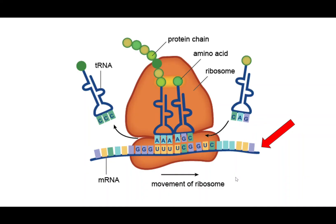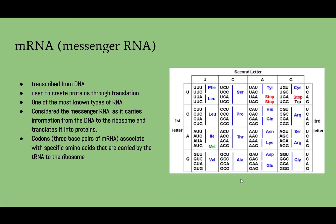This arrow is pointing to the mRNA. mRNA, or messenger RNA, is used to create proteins through translation. Codons, or three base pairs, associate with specific amino acids that are carried by the tRNA to the ribosome. The codon chart to the right depicts this association.